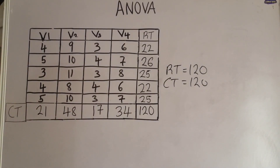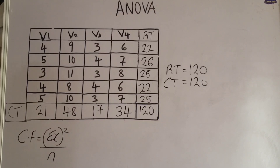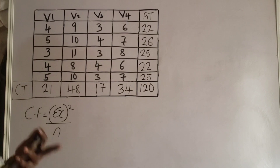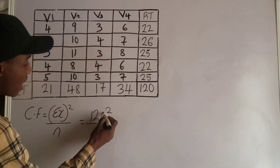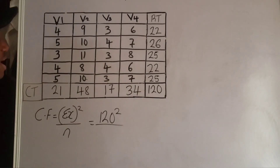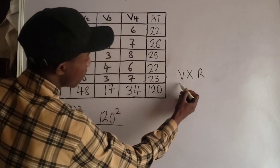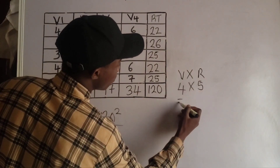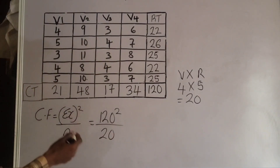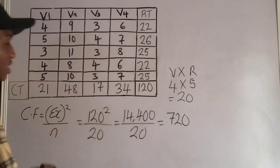The next step is to calculate the correction factor, CF. The correction factor is given by the formula: (ΣX)² / N, where ΣX is the sum of all observations and N is the total number of observations. We already know ΣX = 120, so we have 120² / N. N is obtained by multiplying the number of varieties (4) by the number of replicates (5), giving N = 20. So CF = 14,400 / 20 = 720.